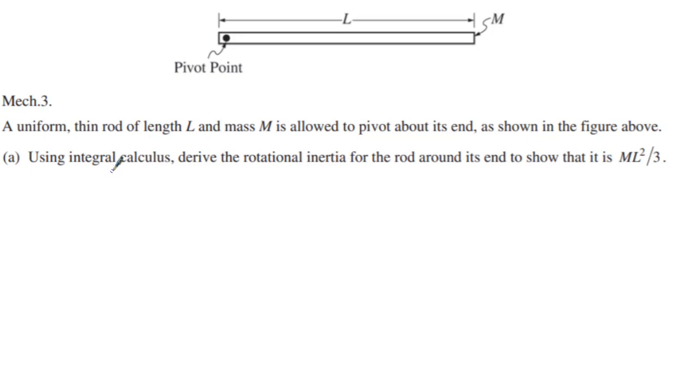You can see they start off a uniform thin rod of length L and mass M is allowed to pivot about its end. And it says, using integral calculus, derive the rotational inertia to show that it's one-third ML squared.